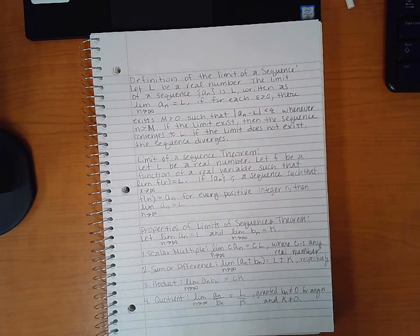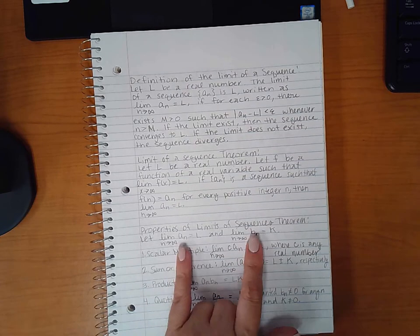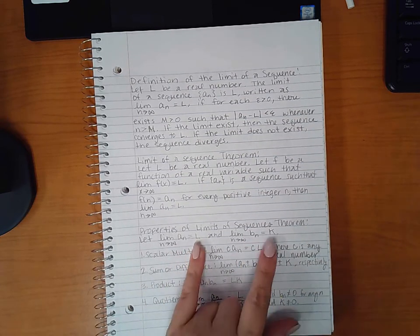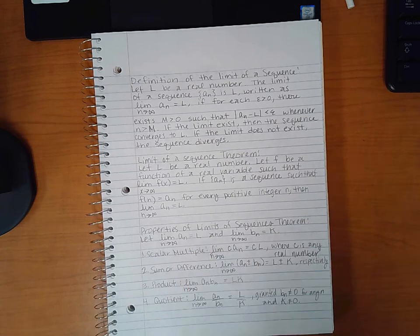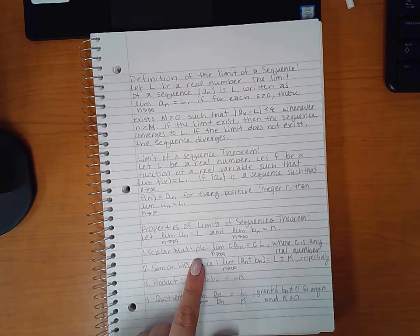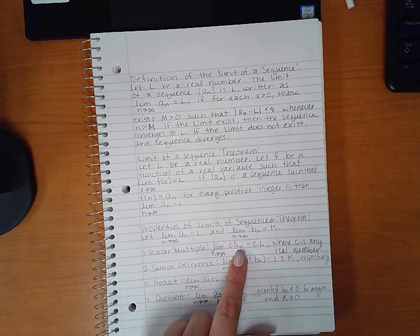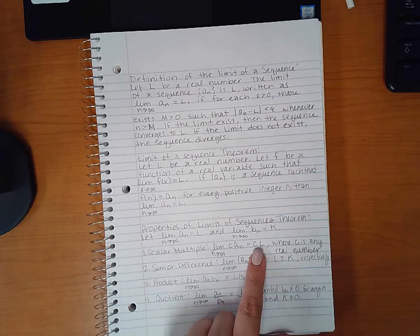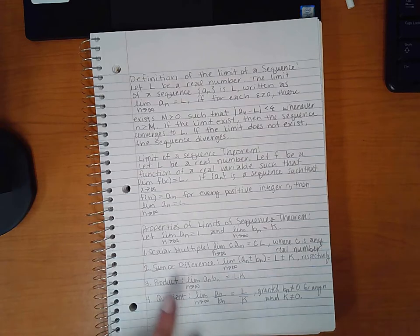Now, the properties of limits of sequences are, if you have two different sequences and one's limit is L and the other's limit is a real number K, then you have the scalar multiple. If you have a multiple times that sequence, then you'll end up with that multiple times its limit, of course, where C is a real number.